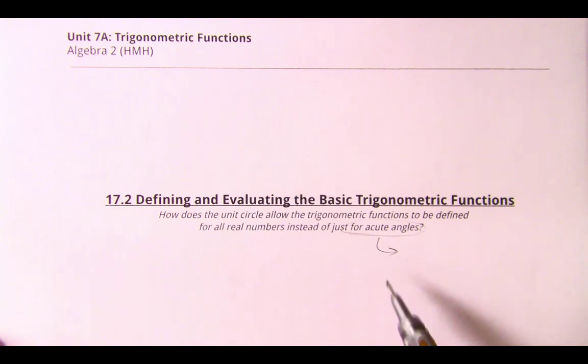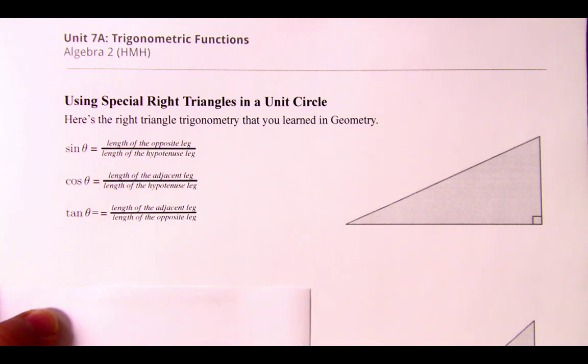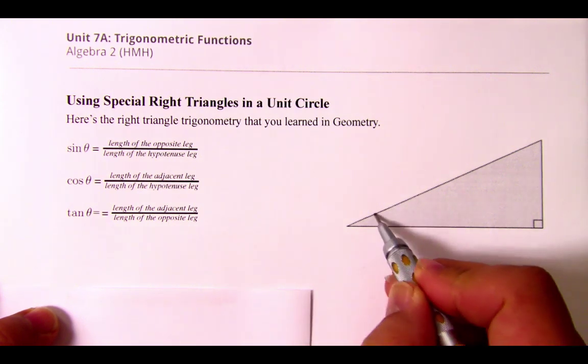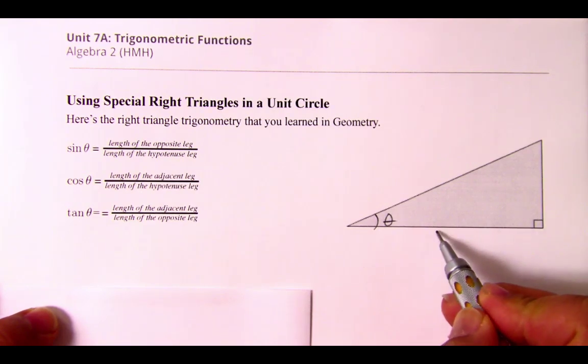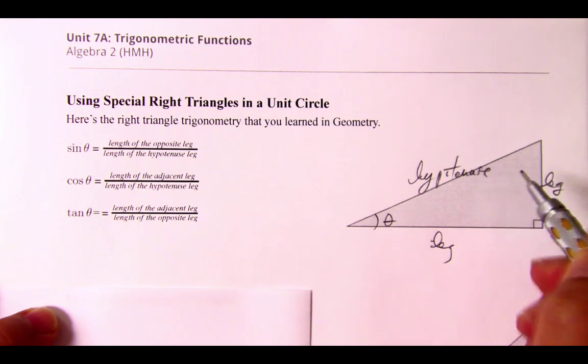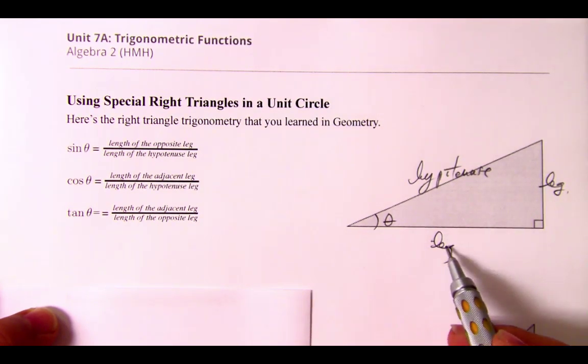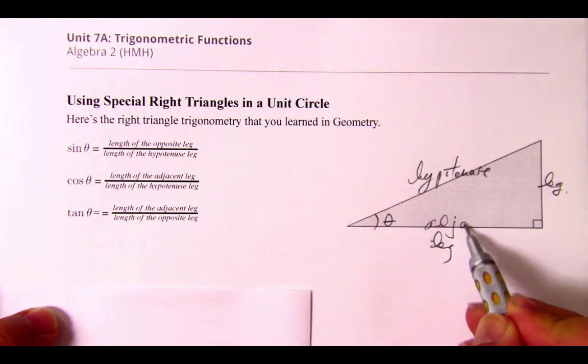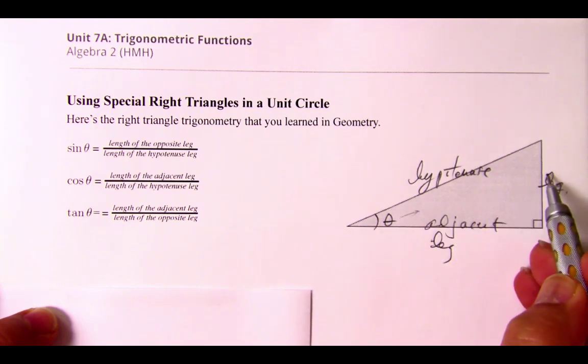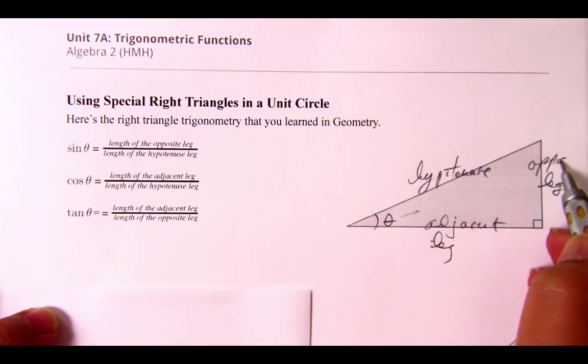Instead of acute angles, this implies that in geometry we learned right triangle trig. You should be very familiar with this particular shape because you learned the special right triangle unit in geometry. Let's say this is theta. This is a leg, this is a leg, and this is the hypotenuse. We need to differentiate between the two legs. This is the leg that's adjacent to the angle, the adjacent leg, and this leg is the opposite side of the angle.